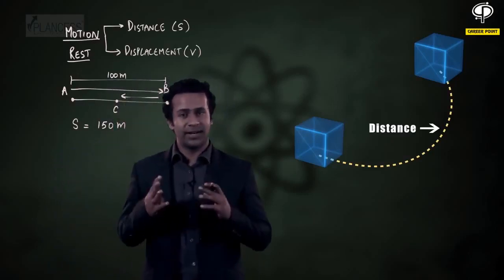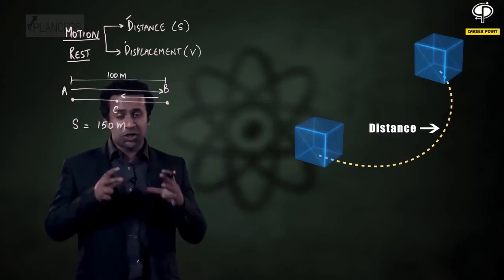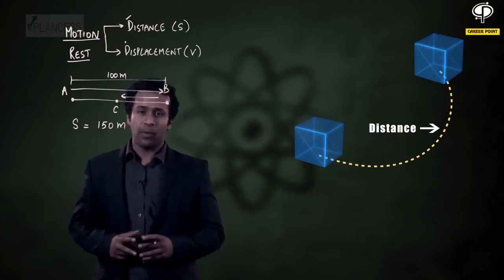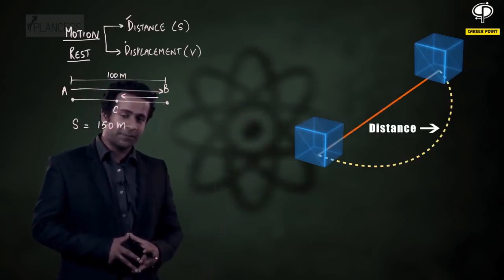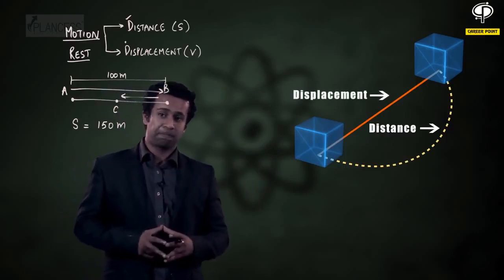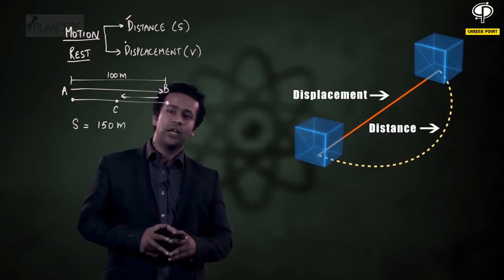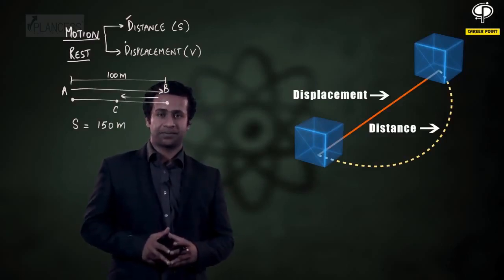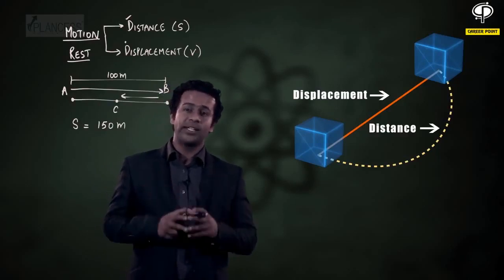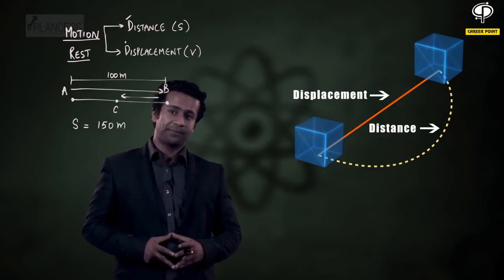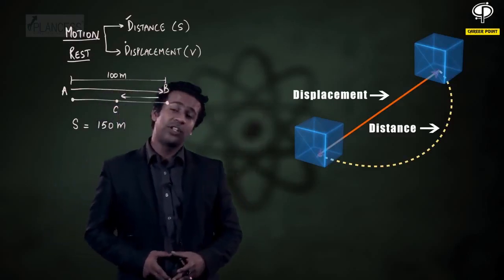Distance is nothing but the length of path taken by the particle. Now, displacement is the shortest distance between the initial point and the final point. The initial position when joined with the final position, this line is basically the displacement. In other words, displacement is the shortest path that a particle could have taken to get from the initial position to the final position. Displacement is a vector quantity and it points from the initial point towards the final point, and its magnitude is equal to the length of the arrow which represents displacement.